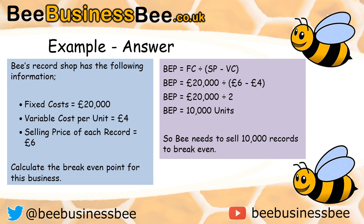So B needs to sell 10,000 records to break even. You then have to use that figure and decide whether it's good or bad, using previous data or common sense. Does selling 10,000 records in a year sound realistic for a record shop? Probably yes — perhaps a little on the high side, but that's using my own judgement.